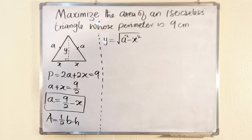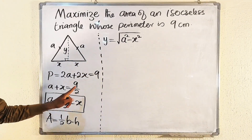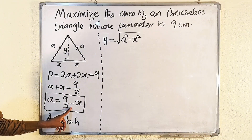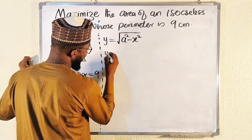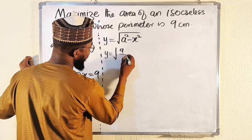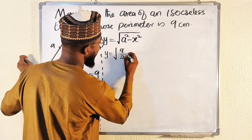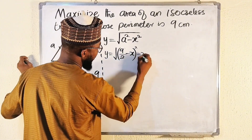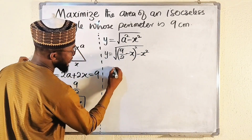We can express everything in terms of x because we have a = 9/2 − x. Therefore the height y = √((9/2 − x)² − x²). Let me expand this expression.